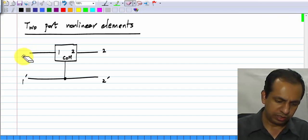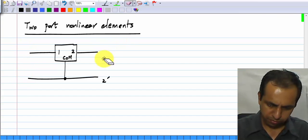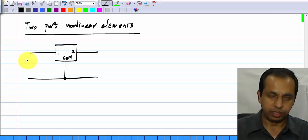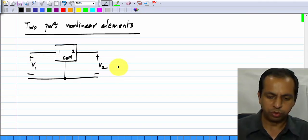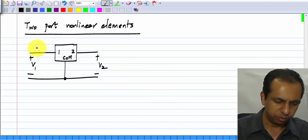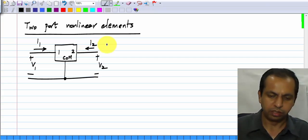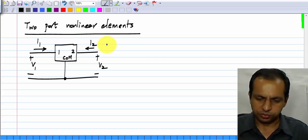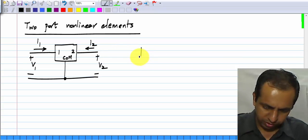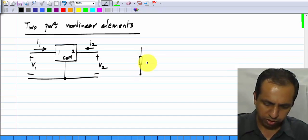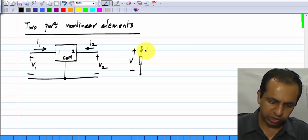As usual, we define the voltages and currents as per the passive sign convention. Because it is a two port, we have two voltages V1 and V2 and currents in this direction I1 and I2. And just for comparison, I will show the single port or a two terminal nonlinearity here, we have a single voltage and a current.